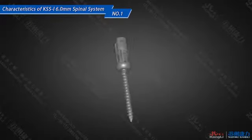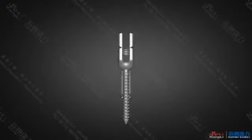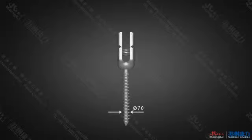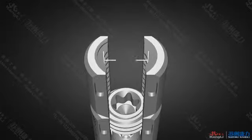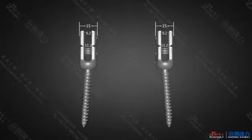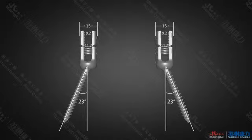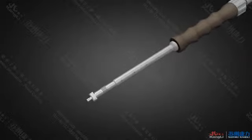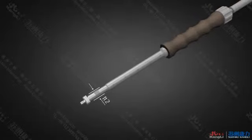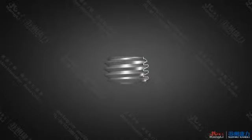Due to the special design, the head of the 7.0 millimeter and 7.5 millimeter multiple axle screw can rotate 23 degrees in any direction, thereby meeting various demands in different clinical practices. The screw can be easily planted with the unique instrument. The triple-thread design of the plug screw effectively prevents the rod from loosening, and the torque design on the top also greatly reduces the risk of sliding.